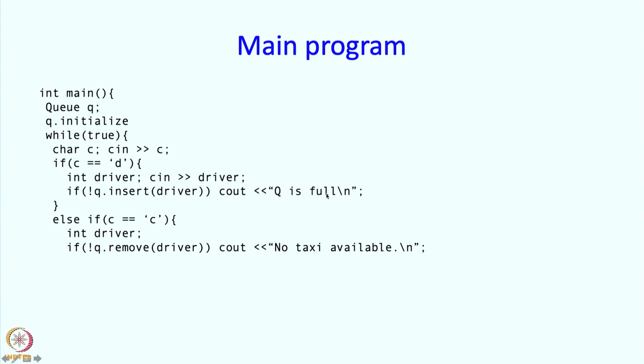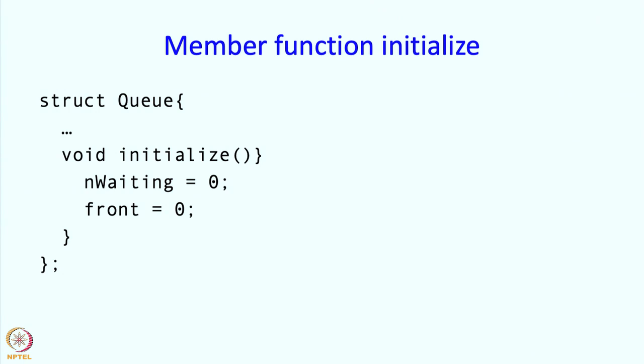If the driver removal is successful, then we print a message saying assigning this driver. That is basically the main program. The member function initialize is actually fairly simple as I just described. It's going to simply set n waiting to 0 and front also to 0.